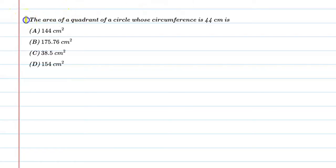Hello students, let's solve this question. The area of a quadrant of a circle whose circumference is 44 cm is?